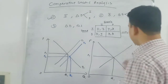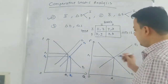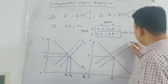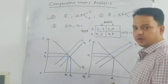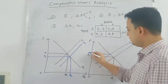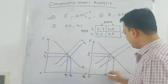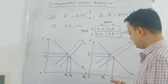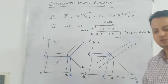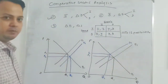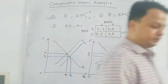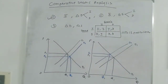When there is a decrease in supply — a leftward shift of the supply curve — what we see is that at the new equilibrium, price will be higher and equilibrium quantity will be lower.